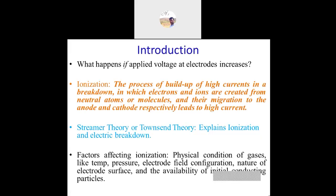Now we go into the basics of how breakdown occurs. If we use electrical equipment such as a circuit breaker and a fault occurs, we need to separate the two electrodes — one from the fault section and one from the healthy section. At that point we must quench the arc in the circuit breaker. If it fails to successfully quench the arc, we need to study what happens.